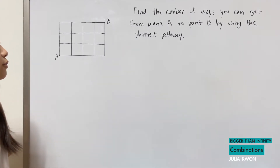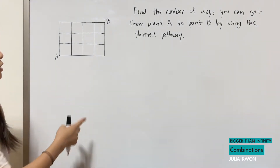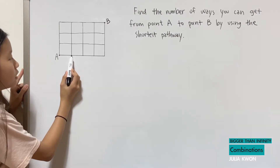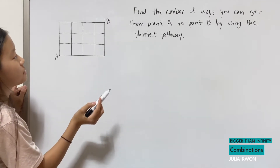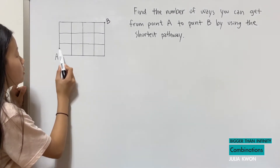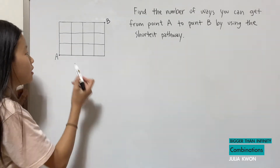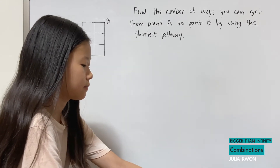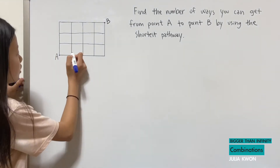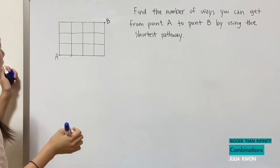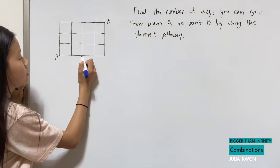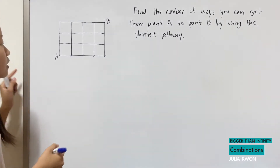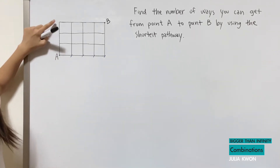There are actually two ways to solve for this. One is by actually just counting all of the number of ways. To get to the first part, there's only one way to get from point A using the shortest pathway — you can't take a longer route. So I'm going to write one here. And to get to each point along the top edge and left edge, there's also only one way for each of those parts from point A.